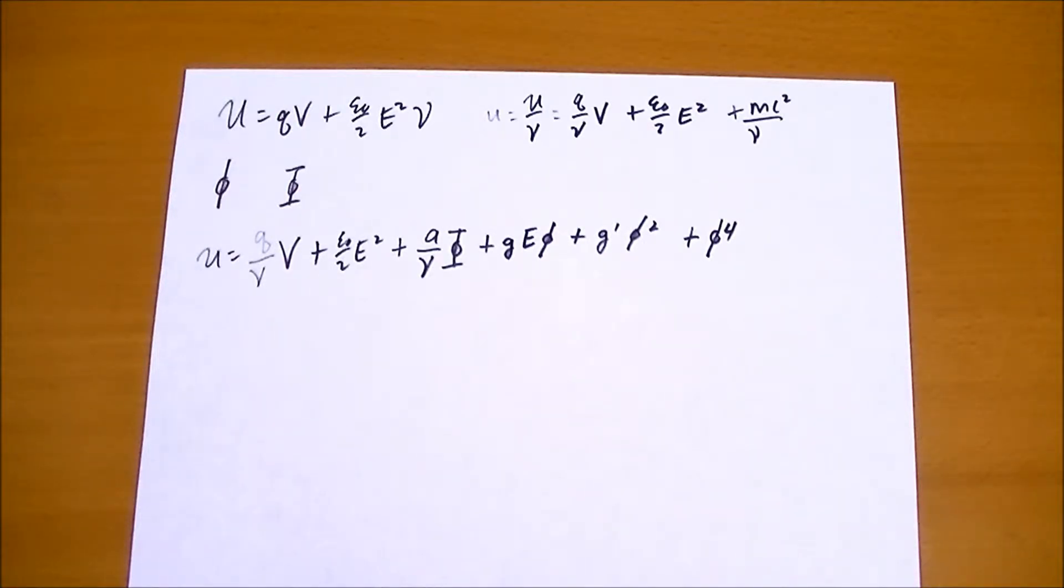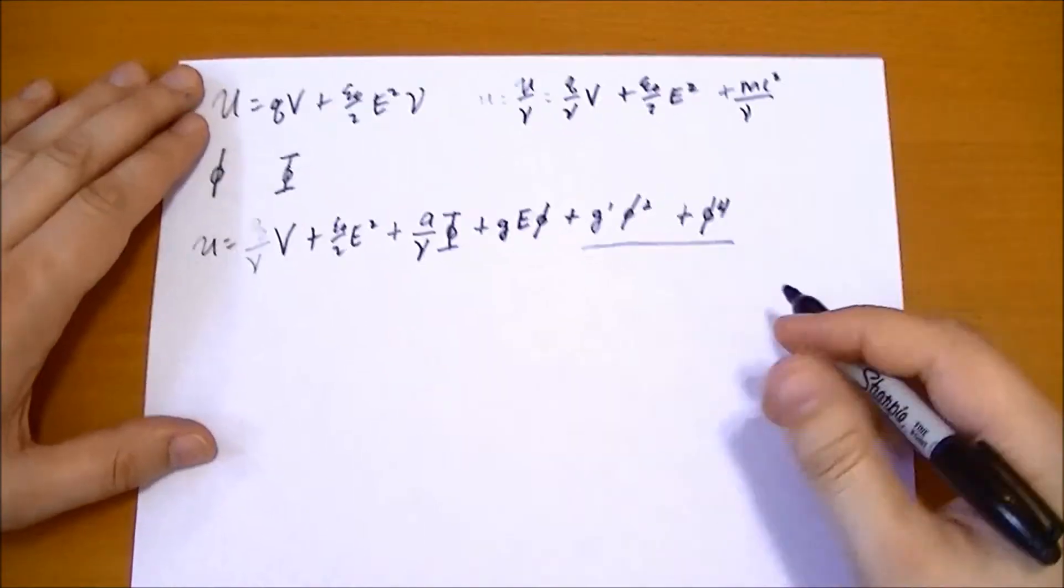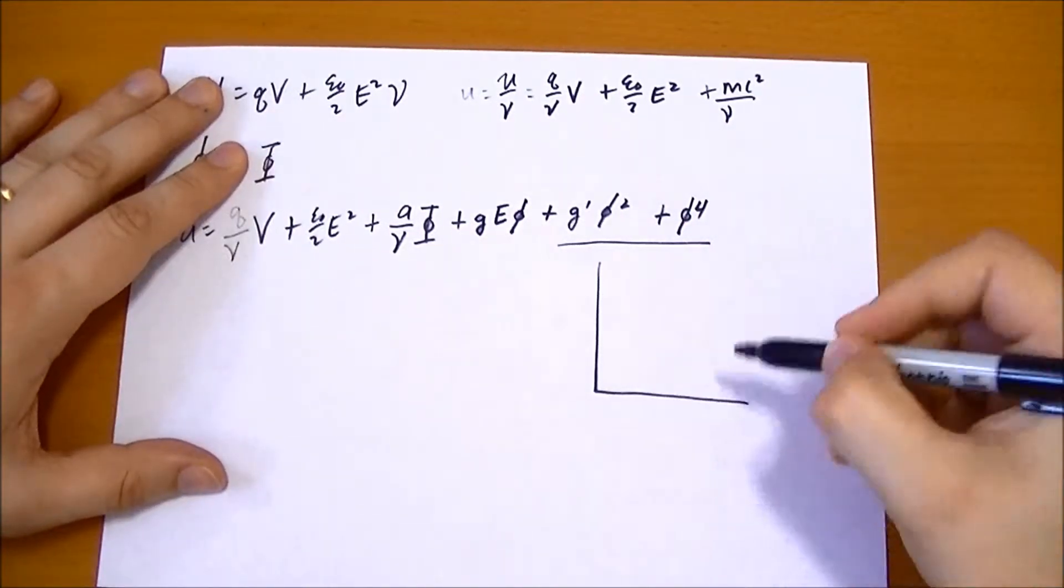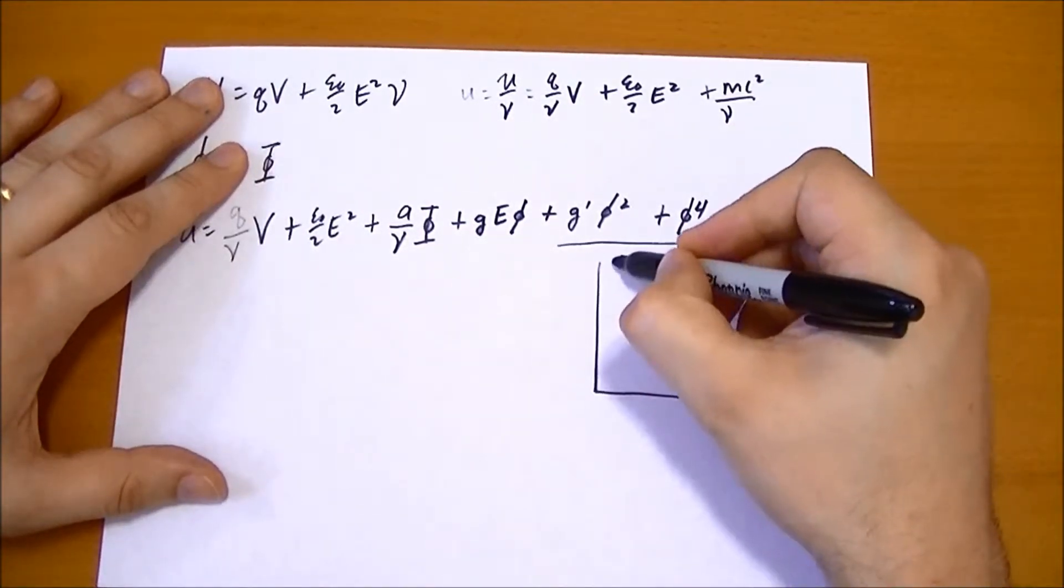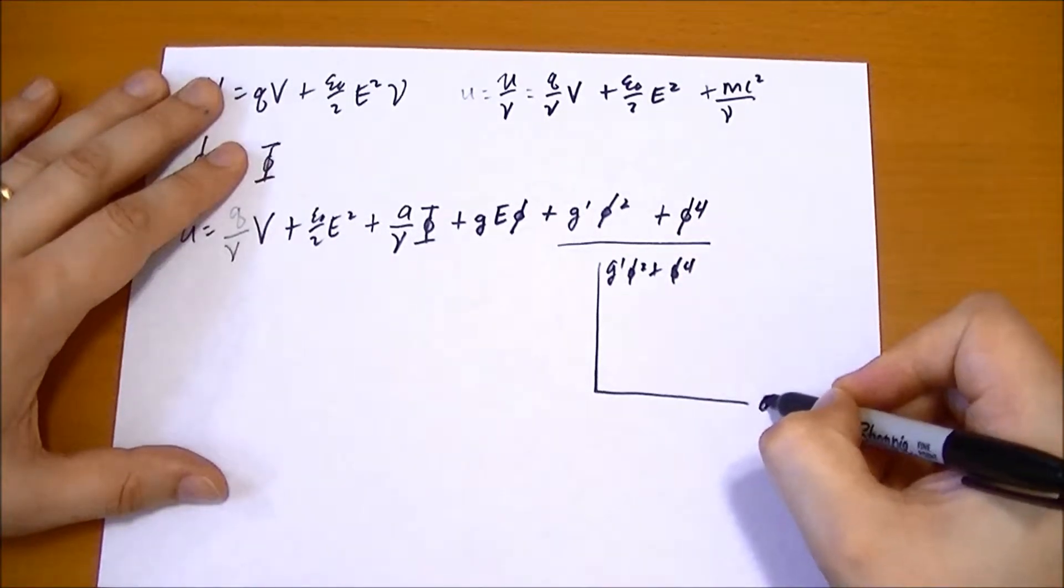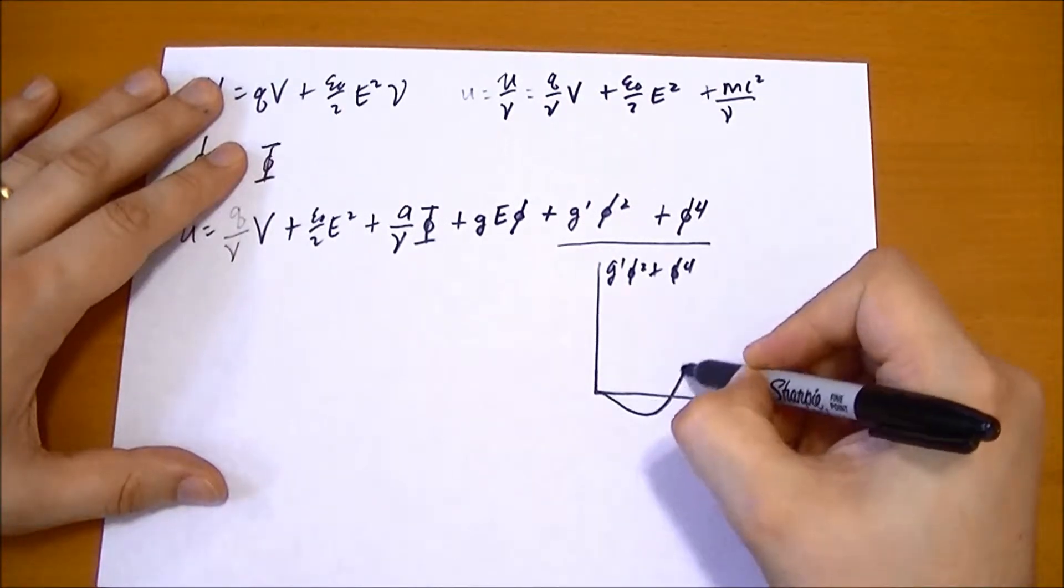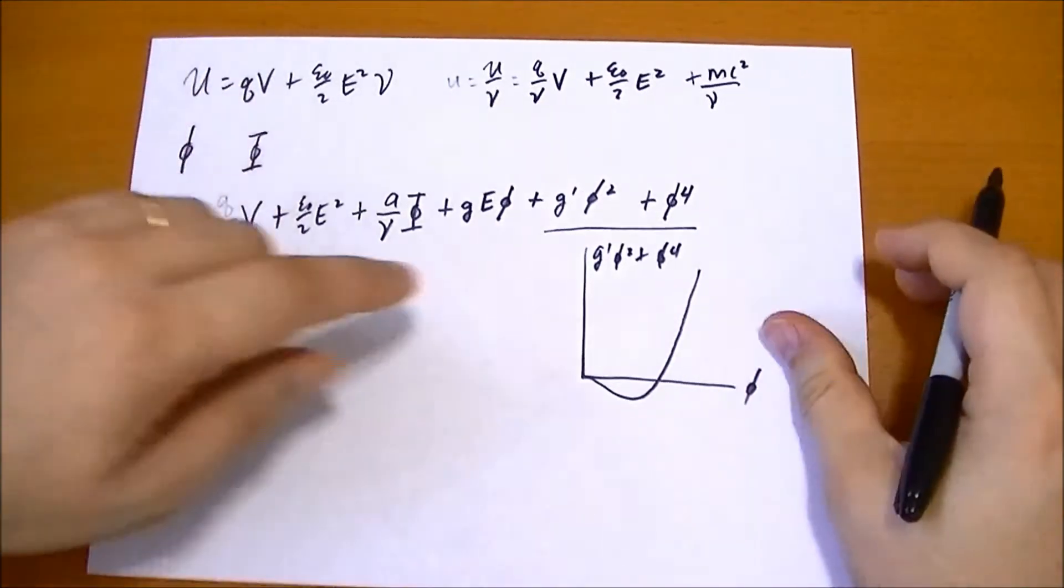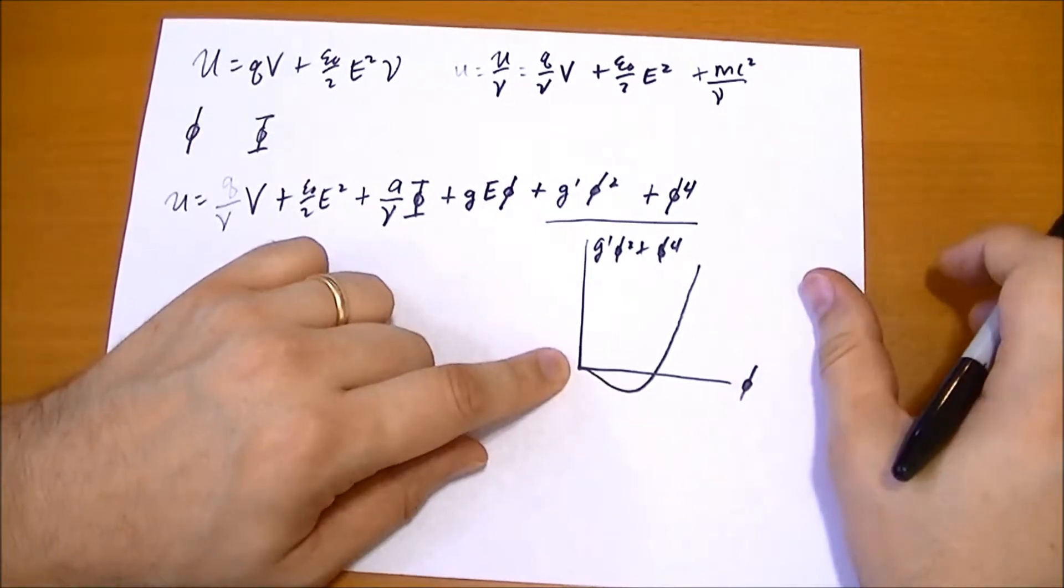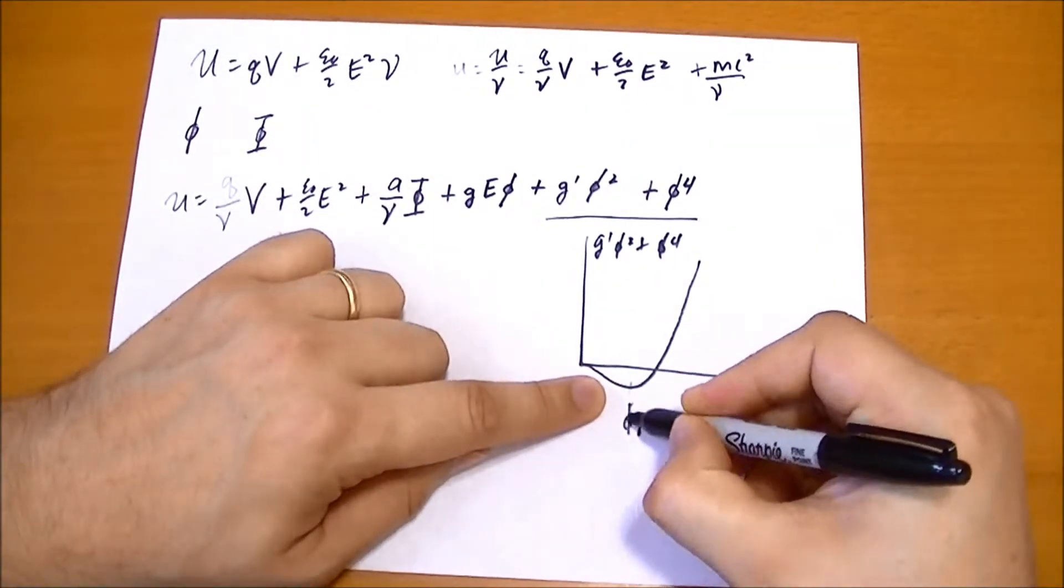So this is nice and all. When you look at this component, if g prime is negative, which we're going to assume it's going to be, then you get a graph. So g prime phi squared plus phi to the 4th, as we change phi. It starts off at 0, then it's going to drop down, and then it's going to pick up. The minimum energy of the field is not found when the field is 0, but when the field is some value of phi naught. That's the minimum energy.